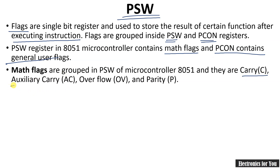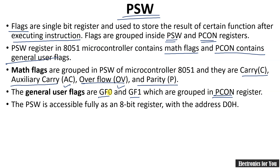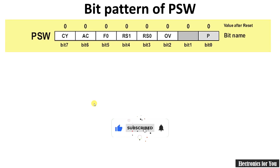The math flags in the PSW are classified as: Carry Flag (CY), Auxiliary Carry Flag (AC), Overflow Flag (OV), and Parity Flag (P). The general user flags are GF0 and GF1, which are grouped in the PCON register. The PSW is a fully accessible 8-bit register with address D0H.